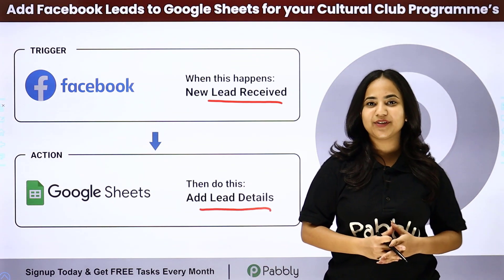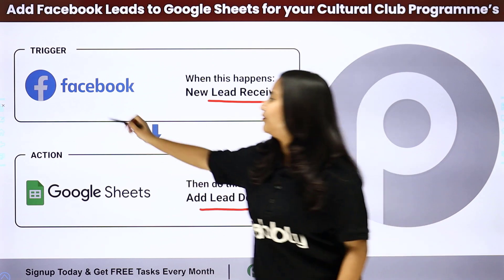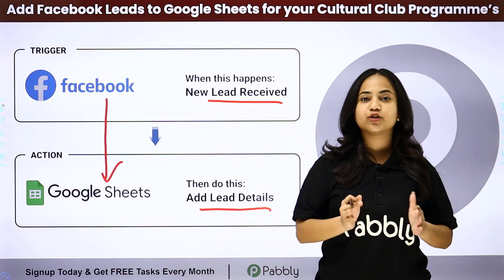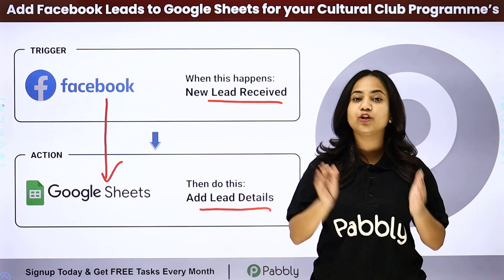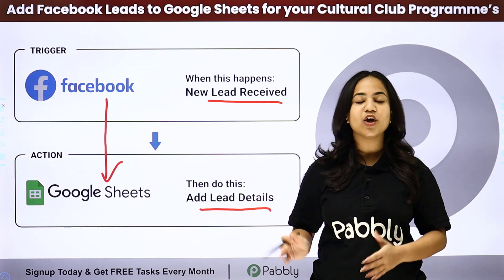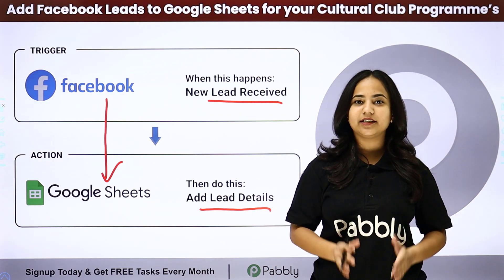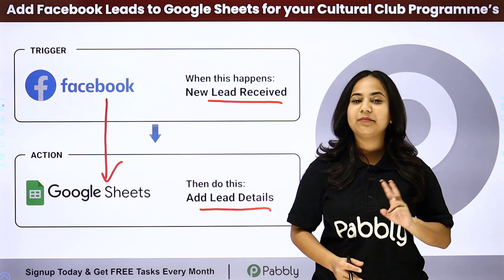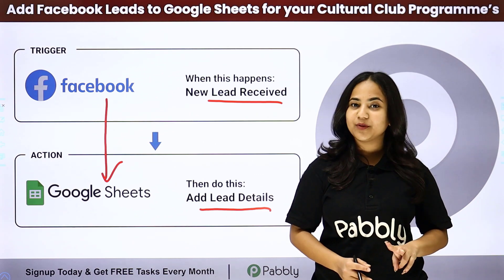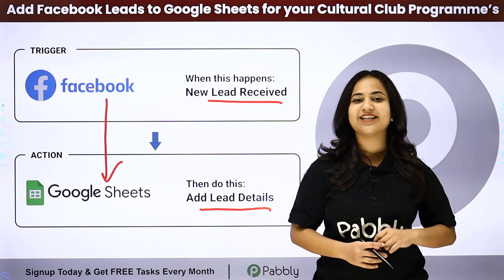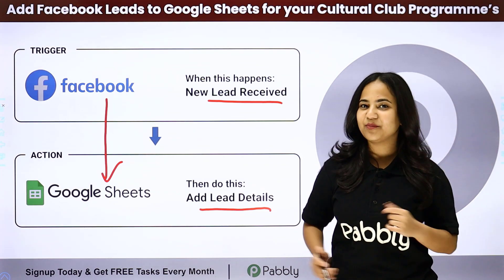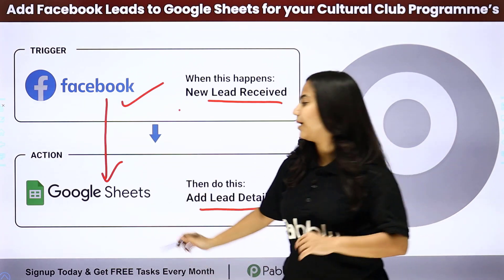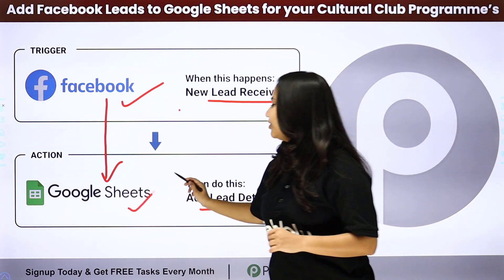For that I am simply going to create a connection between Facebook lead ads and Google Sheets, so that whenever a new lead is received, all the lead details would be added into my Google Sheets automatically. Pabbly Connect works on two principles — first is trigger and second is action. Here my trigger application is Facebook lead ads and my action application is Google Sheets.